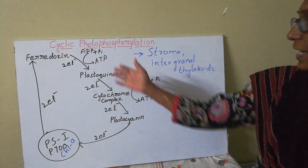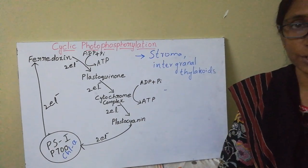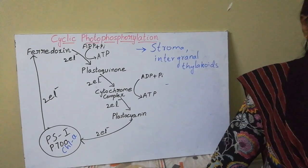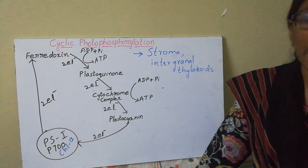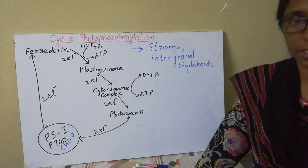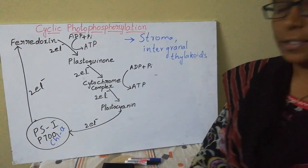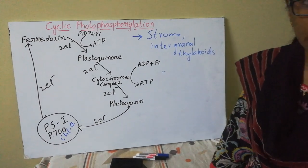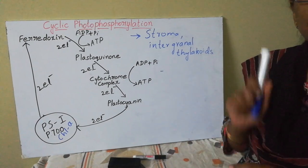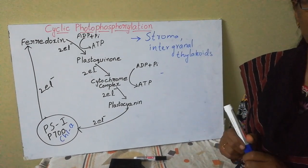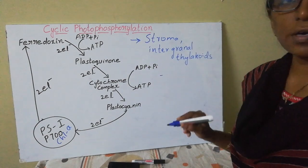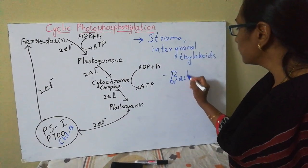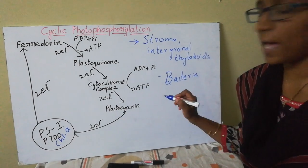Now we'll discuss about cyclic photophosphorylation. In the previous session we discussed about non-cyclic photophosphorylation — how the synthesis of ATP as well as NADPH2 takes place. Cyclic photophosphorylation can be seen in bacteria as well as when there is failure of non-cyclic photophosphorylation. It occurs in prokaryotes.